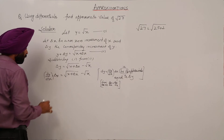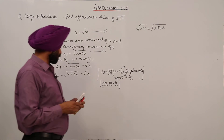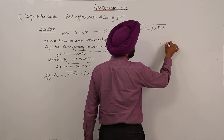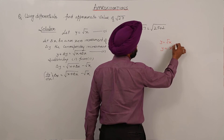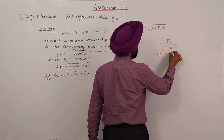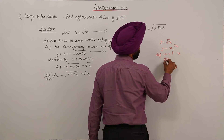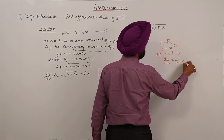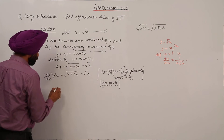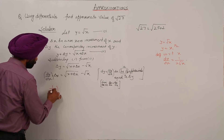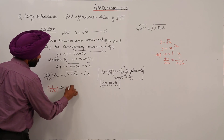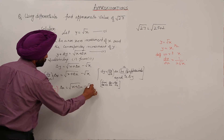For dy/dx: our function is y equals square root of x, which we can write as x raised to the power 1/2. Differentiating with respect to x, we get dy/dx equals 1 upon 2 root x. Substituting this into the formula: 1/(2√x) times delta x equals square root of x plus delta x minus square root of x.